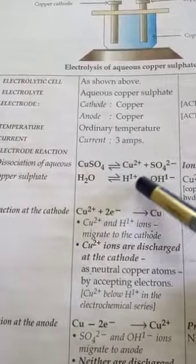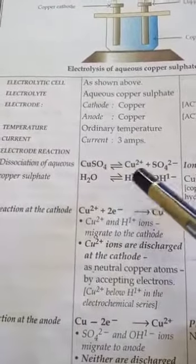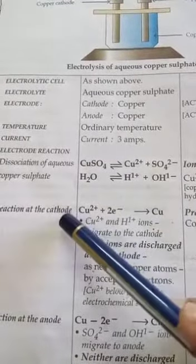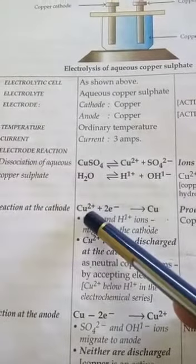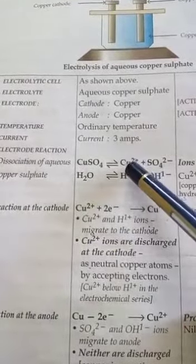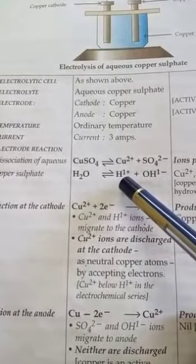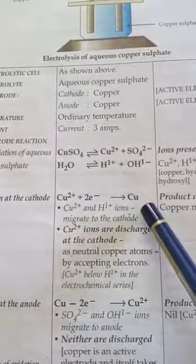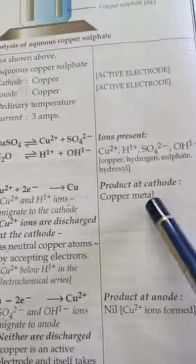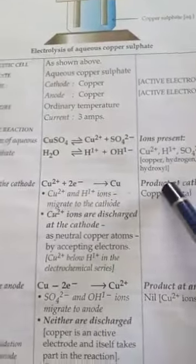Positive ions, copper ion and hydrogen ion, these two ions will move towards cathode. But out of these two, only copper ion will discharge because copper ion has lower position in the reactivity series. So here copper ions will get reduced to form copper atoms. Reddish brown metal will get deposited at cathode.